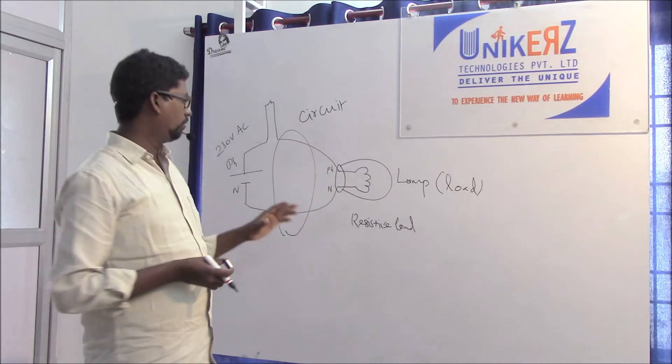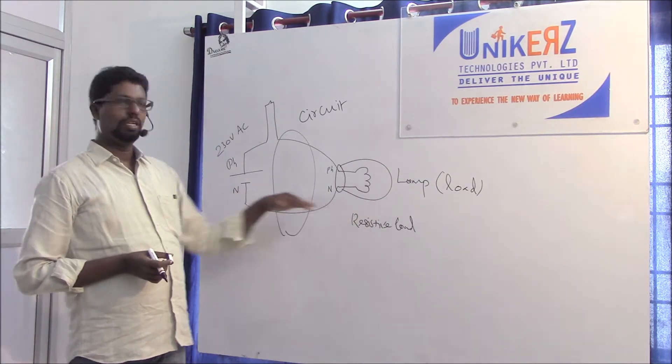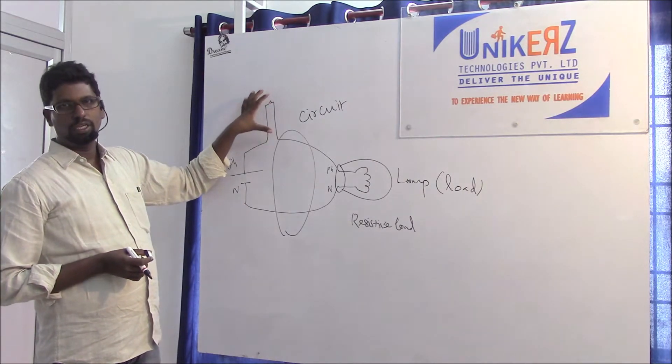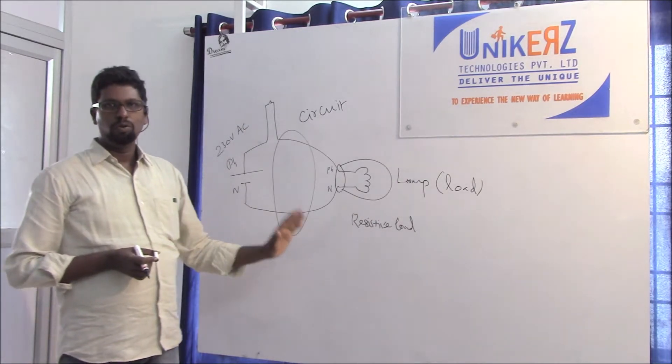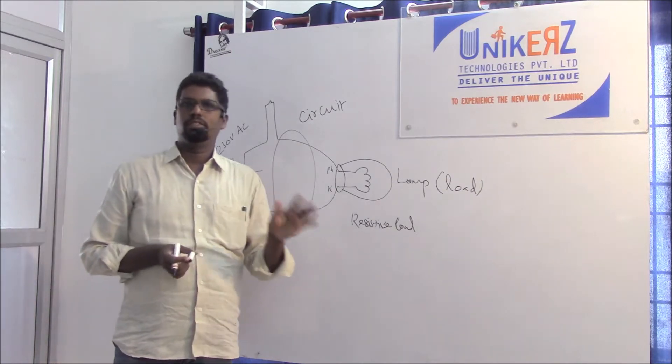So circuit is nothing but load, power source, control equipment device - whatever it is, it is closed path, electrical circuit.